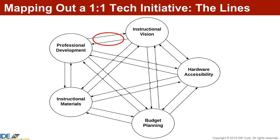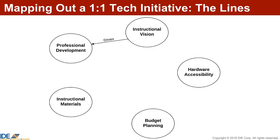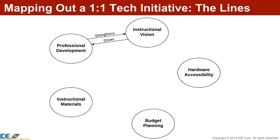For example, the instructional vision should drive the professional development — all professional development should begin with that instructional vision. That means the professional development should then strengthen the instructional vision. If the vision drives the PD and the PD strengthens the vision, you have a good systems interrelationship.